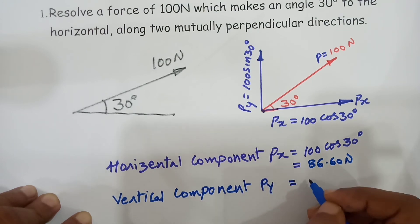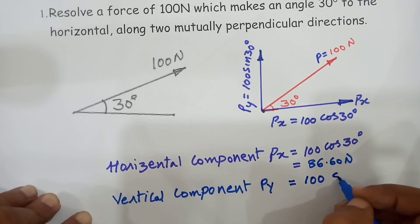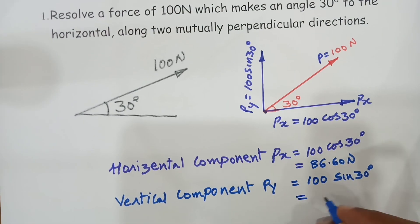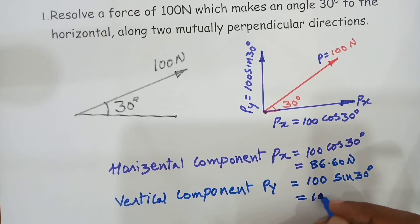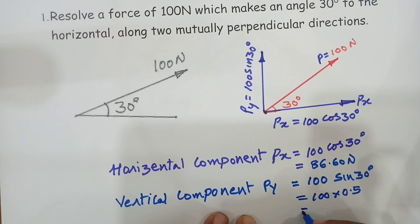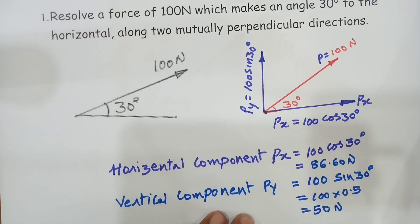The vertical component Py is equal to 100 sin 30 degrees. Since sin 30 is 0.5, it becomes 50 newtons. So like that, we resolve the forces into the horizontal component as well as the vertical component.